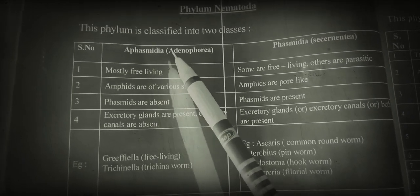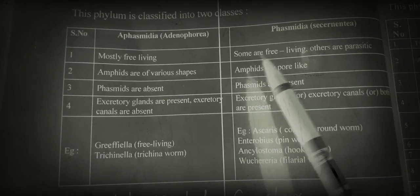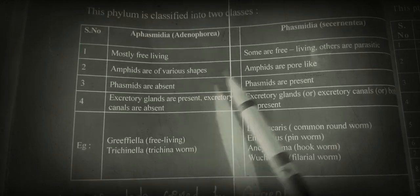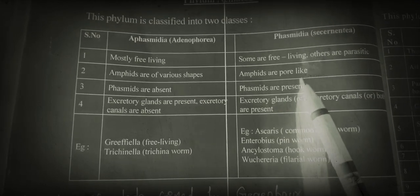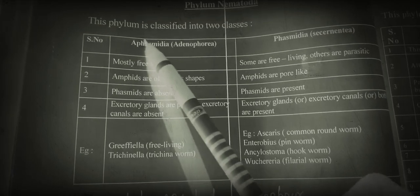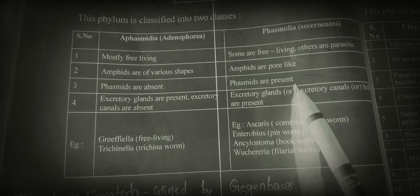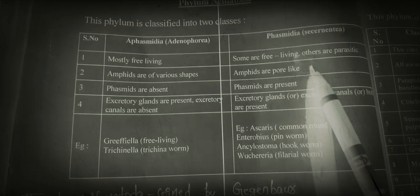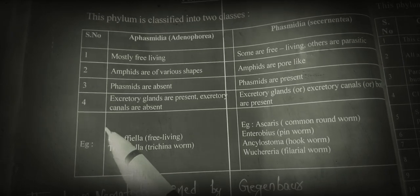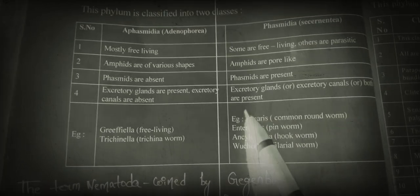The members of Aphasmidia are mostly free-living, whereas in Phasmidia, some are free-living and others are parasitic. In Aphasmidia, amphids are of various types and are pore-like, while phasmids are absent — the name 'A-phasmidia' means phasmids are absent. In Phasmidia, phasmids are present and amphids are also present and pore-like. Regarding excretion, in Aphasmidia, both excretory glands and excretory canals are present.